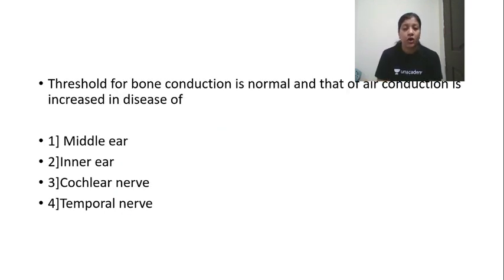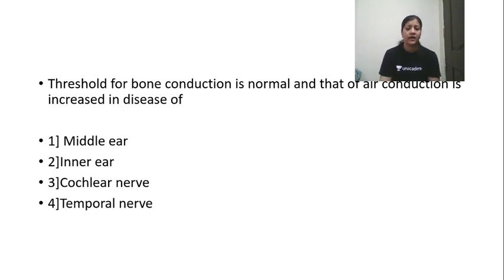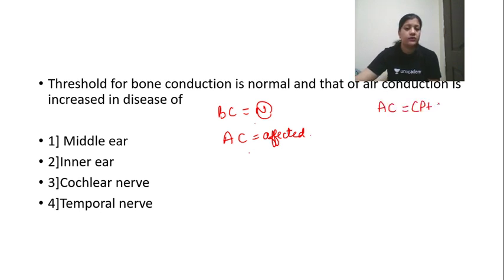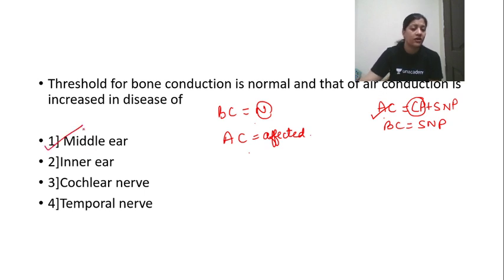MCQ: Threshold for bone conduction is normal and that of air conduction is increased — in a disease of which structure? Using the formula: AC equals conductive pathway plus sensorineural pathway; BC equals sensorineural pathway. If BC is normal but AC is affected, only the conductive pathway is involved. This occurs whenever there is a disease of the middle ear — i.e., a conductive pathology.